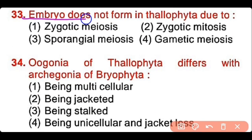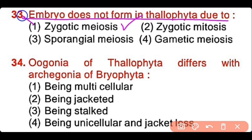Question number 33: Embryo does not form in thallophytes due to zygotic meiosis, zygotic mitosis, sporic meiosis, or gametic meiosis? The correct answer is option 1. Due to the presence of zygotic meiosis, embryo is not formed in the case of thallophytes.